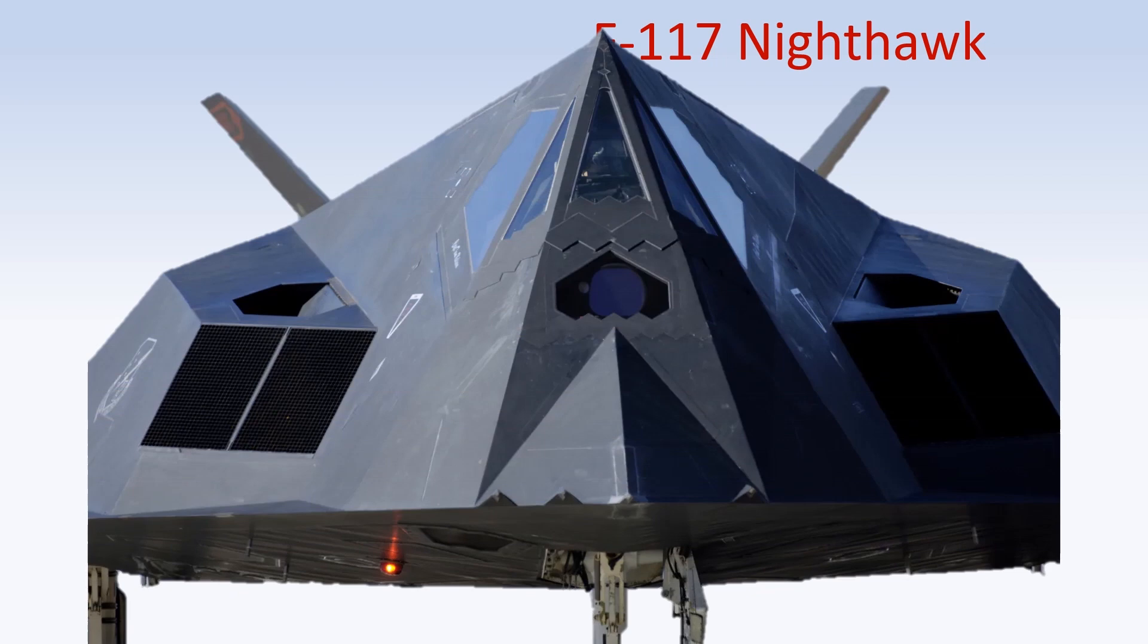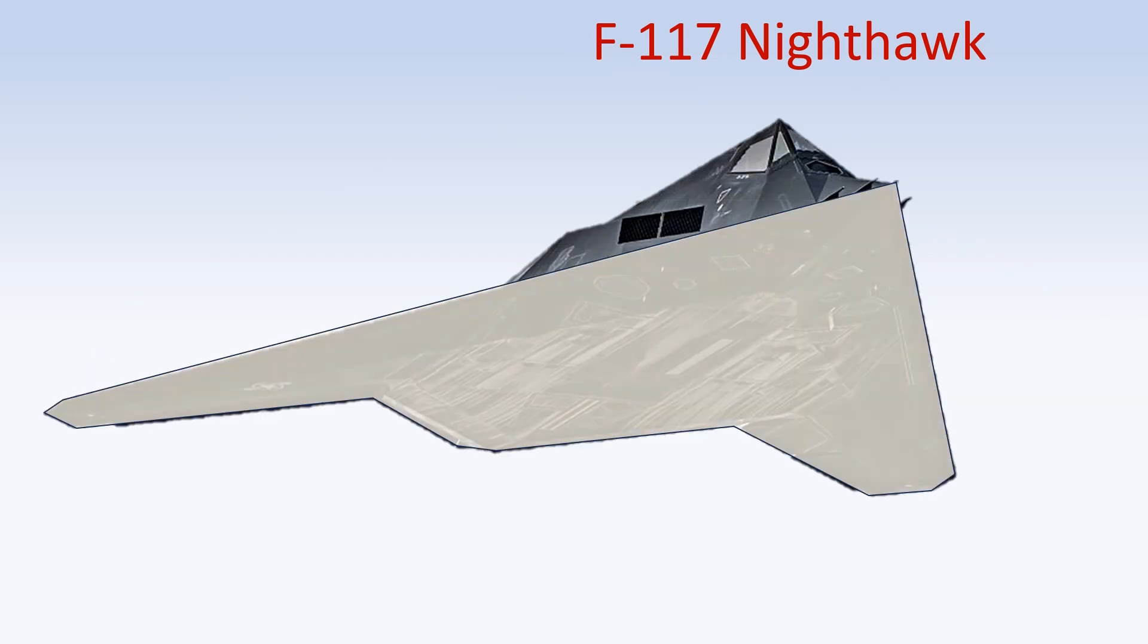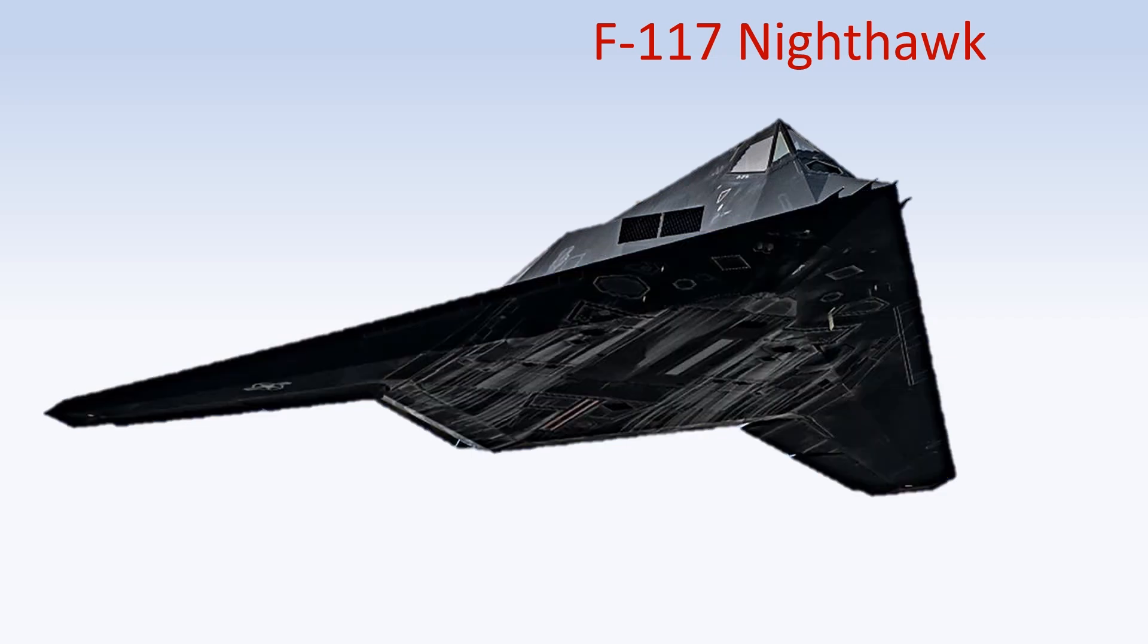As you can see, the F-117's surface is covered with a flat, faceted angle design. The bottom surface is nearly completely flat. This is because the flat surface is the ideal shape to deflect radar waves away from the radar source.